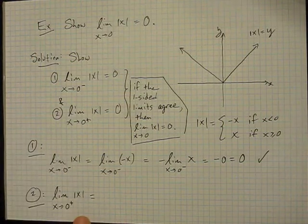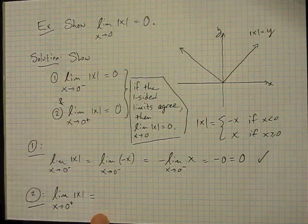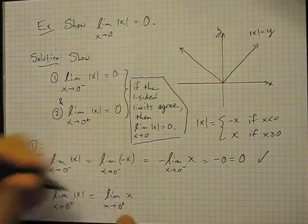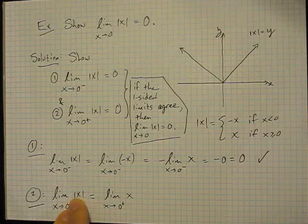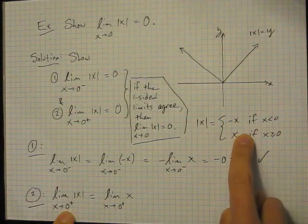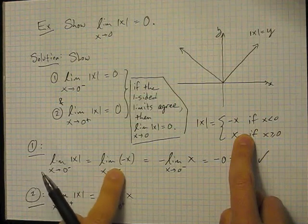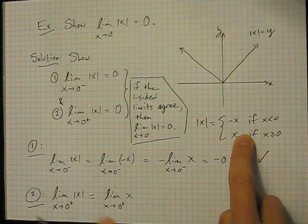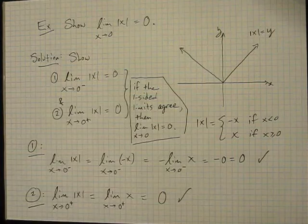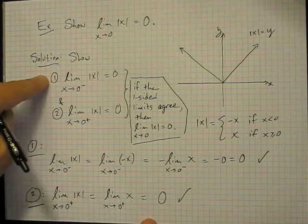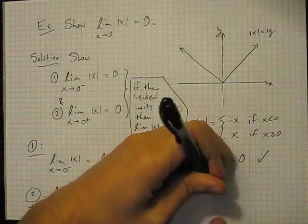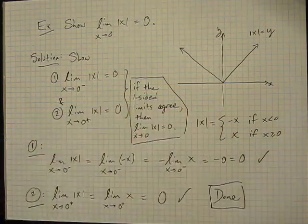Step 2: from the right-hand side, the limit is also 0. When x is positive, the absolute value function is just x. So the limit as x goes to 0 from the right of x is simply 0. Check. Since we've shown the limit from the left and the limit from the right are both equal to 0 — the two one-sided limits agree — therefore the limit of the absolute value of x as x goes to 0 equals 0. That's section 1.6.